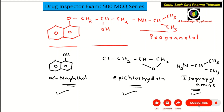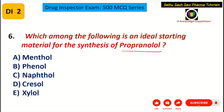The question asks which of the following is the ideal starting material. You have naphthol among the choices, so the correct answer is naphthol, which is C choice — specifically alpha naphthol, not beta naphthol. Please remember the starting material for the synthesis of propranolol is alpha naphthol. The correct answer is C choice.